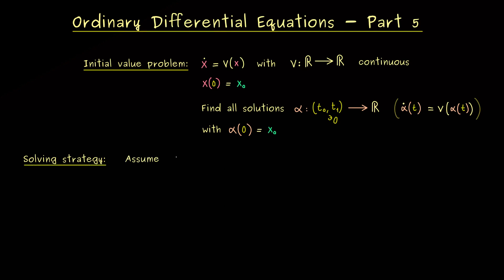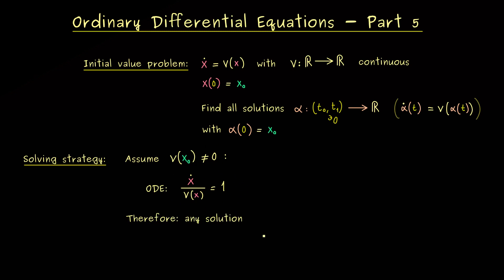Let's first handle the case where v at our value x₀ is not 0 — in other words, strictly positive or strictly negative. We take this case because we can simplify the ODE by dividing by v of x. Hence the ODE now looks like x-dot divided by v of x equals 1. Because v is a continuous function, this makes sense in a neighborhood around x₀, even if v has zeros elsewhere.